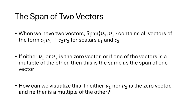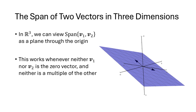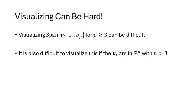Now, with two vectors, we look at span{v1, v2} — all vectors of the form c1·v1 + c2·v2. If either vector is the zero vector, or if one is a multiple of the other, we're essentially back to the one-vector case. But if neither is the zero vector and neither is a multiple of the other, then in R3 the span of {v1, v2} can be visualized as a plane through the origin. Things become harder to visualize with more vectors or in higher dimensions.